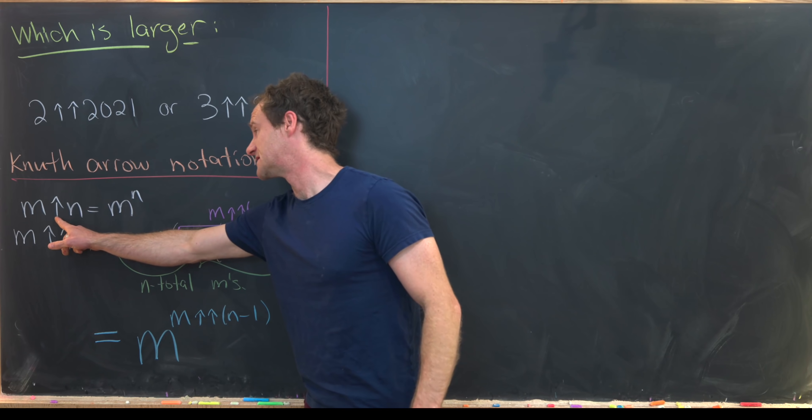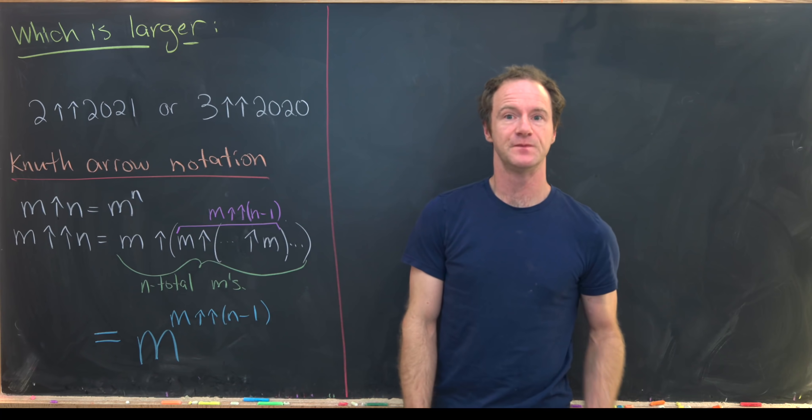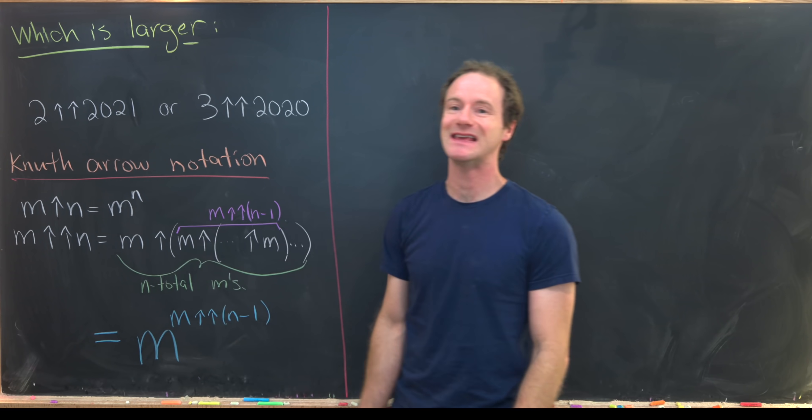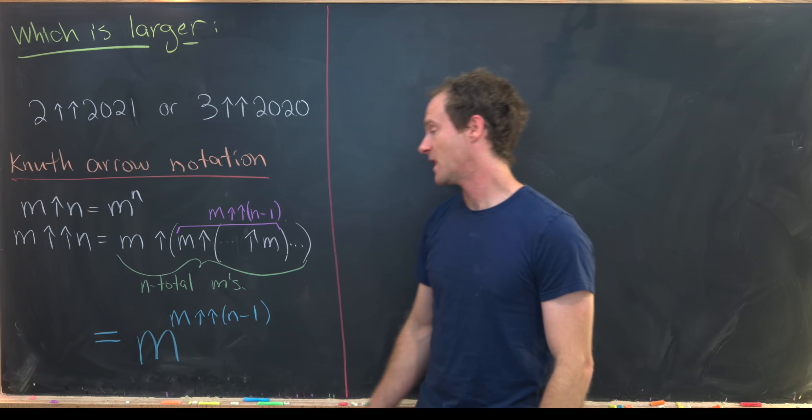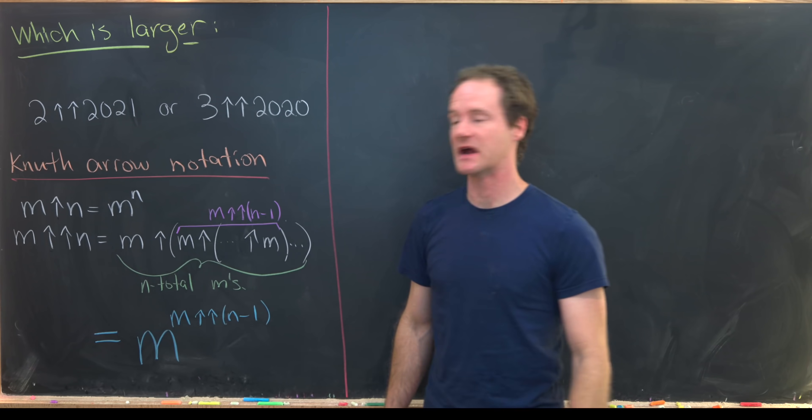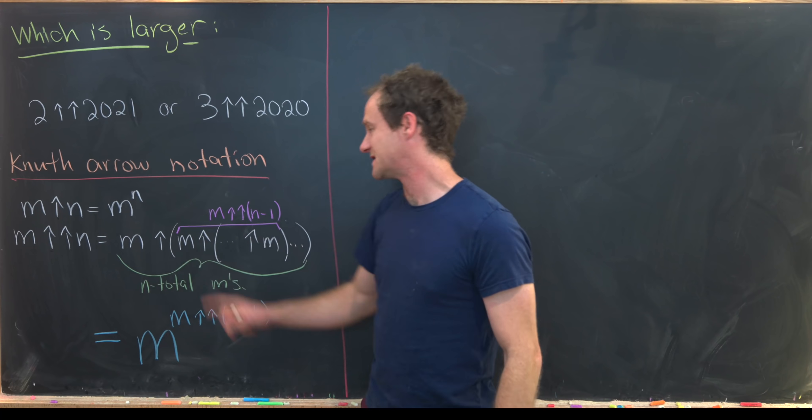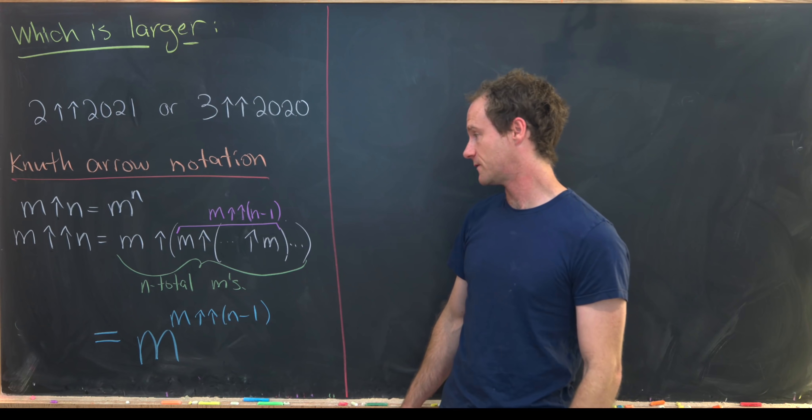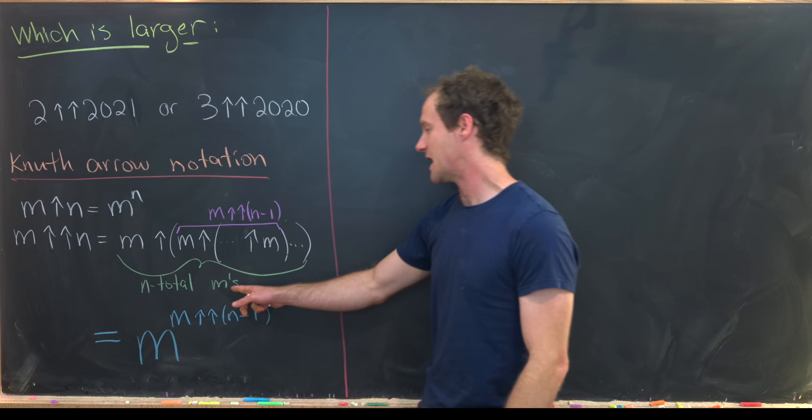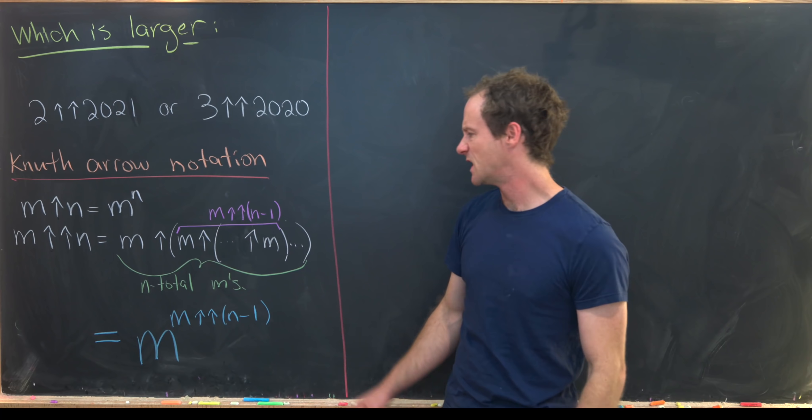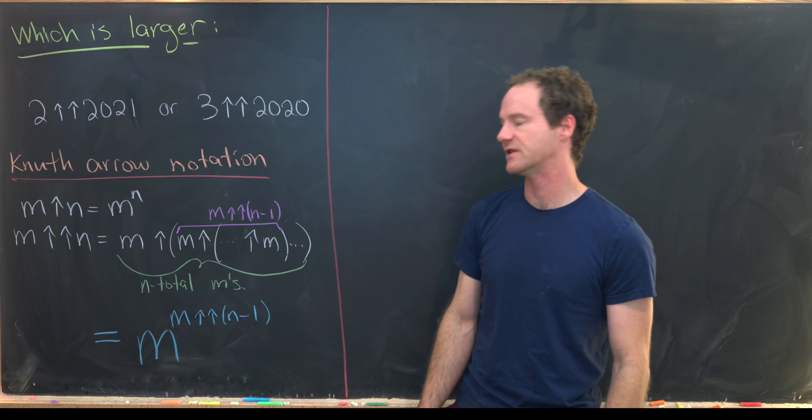We've got m with a single arrow n is the same thing as m to the nth power. And then m with a double arrow n is equal to this combination of m with single arrows of itself where we repeat m n total times.